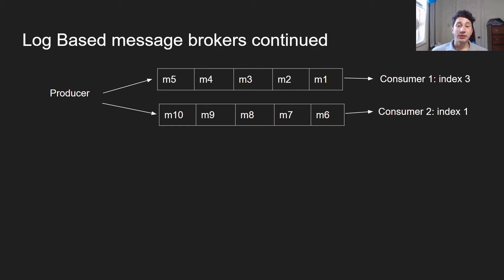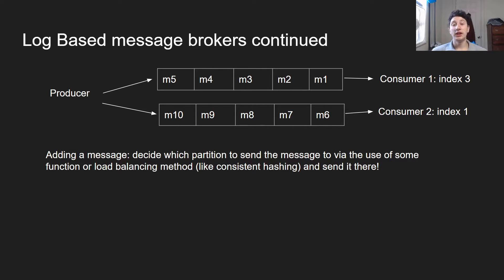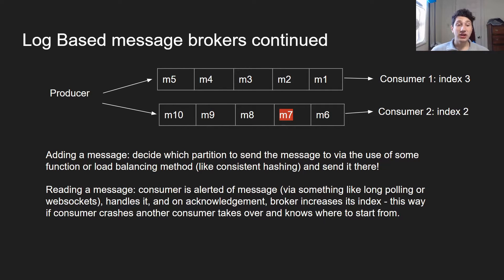So actually representing this visually, as you can see, we have these two partitions in a log-based message broker, and we have a consumer reading each of them. The producer, based on some sort of hash function, can push a message to either of these partitions. On a write, for example, let's say we're going to write to the top partition — we'll say write M5. All we're going to really do is use our hash function to decide which partition the message is going to be sent to, and then go ahead and append it to that write-only log.